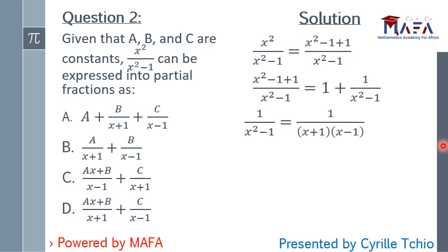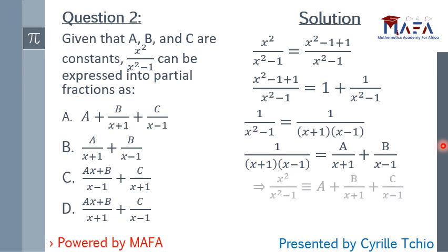So 1 over (x+1)(x−1) equals A over (x+1) plus B over (x−1). Therefore we can conclude that x² over x²−1 is equivalent to A plus D over (x+1) plus C over (x−1), where A, B and C are constants. The answer is A.